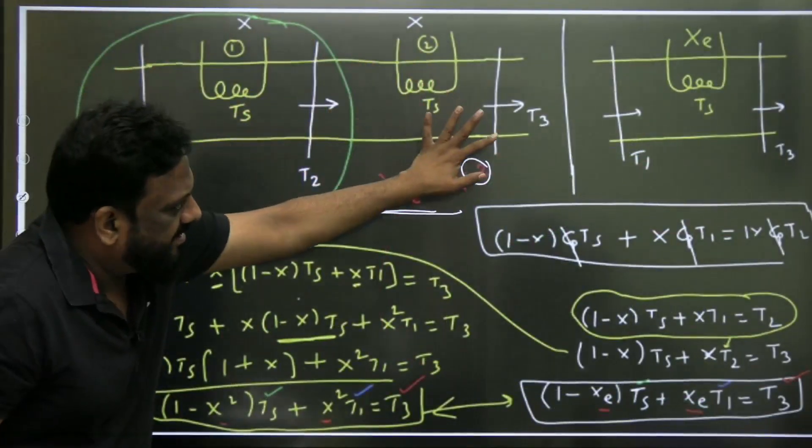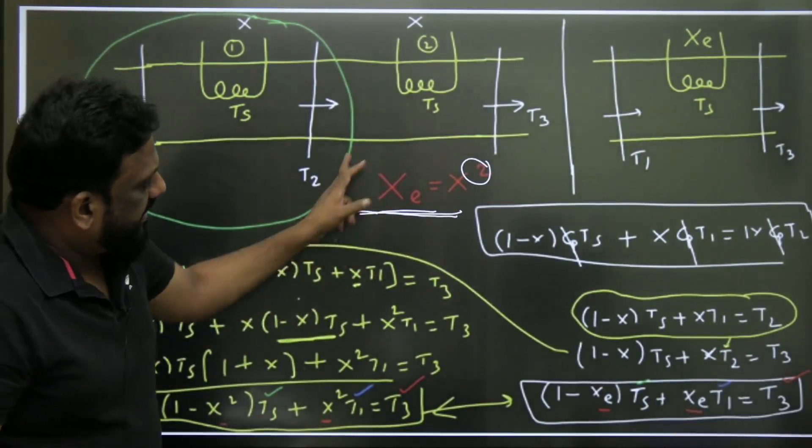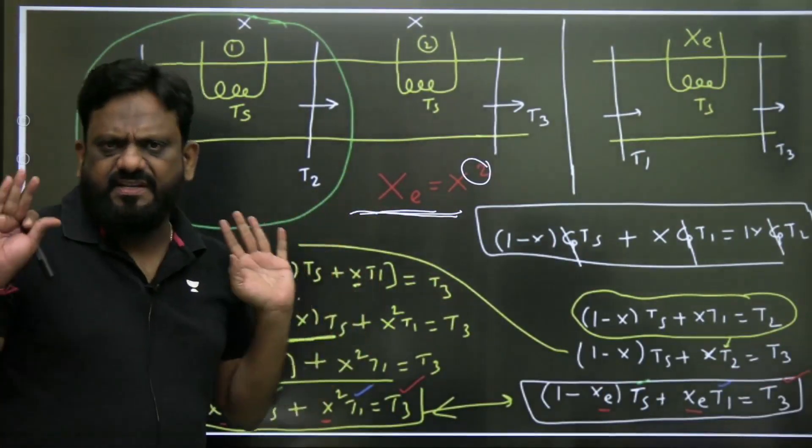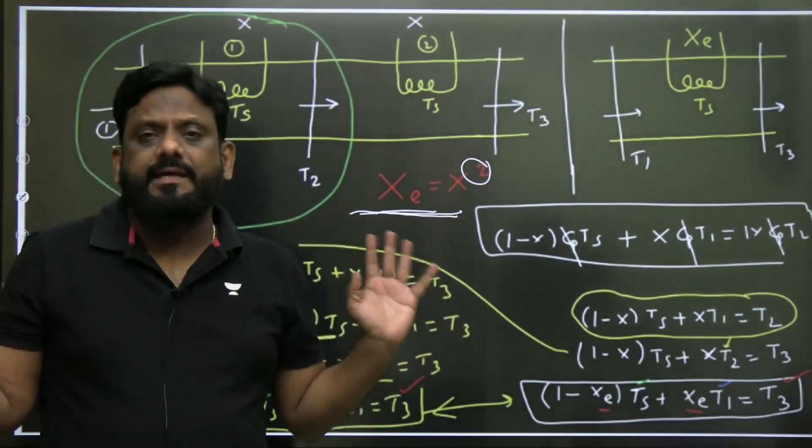Then we have refrigeration, air conditioning. This is taken from psychrometry, that is the bypass factor, effective bypass factor. Every derivation is given and wherever derivations are required, I have derived all equations.